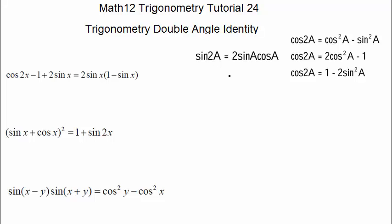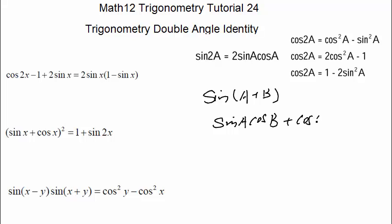Double angle formulas are actually just specializations of sum angle formulas. Let's think about sine 2a. We have learned that sine(a + b) equals sine a cosine b plus cosine a sine b. So we are looking for sine 2a — can we imagine sine(a + a)?